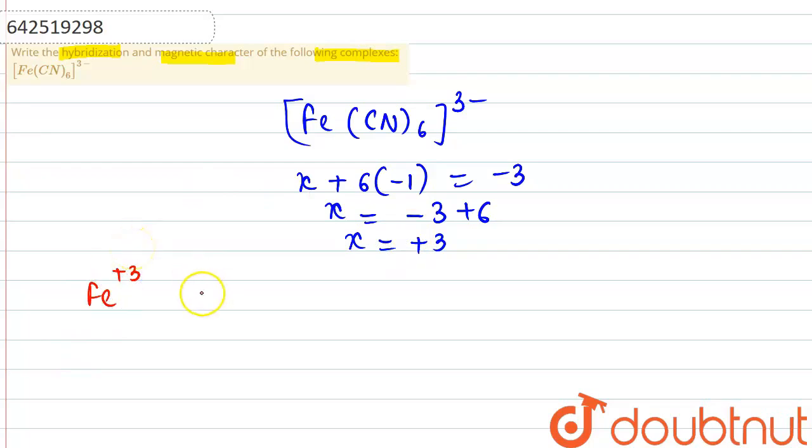So if we draw its configuration in the plus 3 oxidation state, then it would be 1, 2, 3, 4, 5 electrons in the 3d orbital.